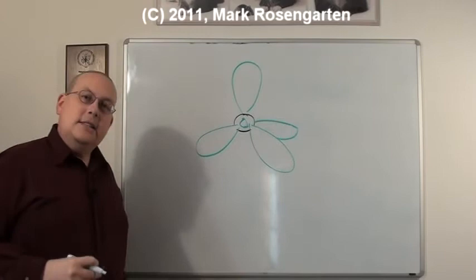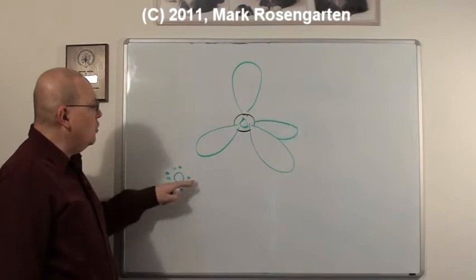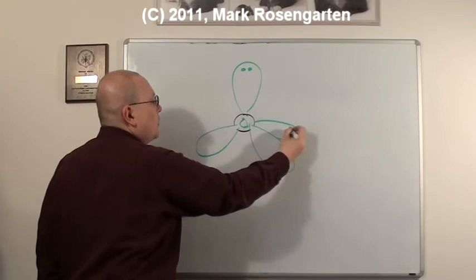All right, now let's say we have oxygen. Oxygen has one, two, three, four, five, six valence electrons. Two lone pairs and two unpaired electrons. So, here are two lone pairs, and here are the unpaired electrons.